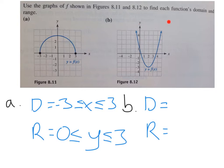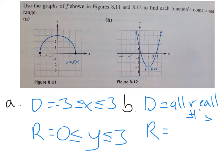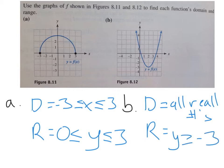In Part B, the graph has arrows. Arrows mean the graph continues in that direction, so the x values extend infinitely left and right — the domain is all real numbers. For the range, since the arrows go up, the outputs go to infinity. But the smallest y value appears to be negative 3. So the range is y greater than or equal to negative 3, meaning y can be negative 3 at the smallest and anything bigger.